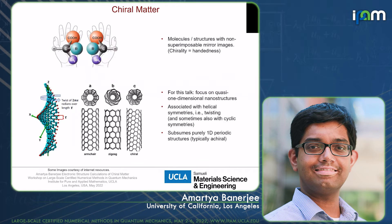Chirality in chemistry simply means handedness. A structure or molecule is chiral if you cannot superimpose it on its mirror image. For the purpose of this talk, I'm thinking of a more specific kind of chiral material — one-dimensional structures that have some sort of twist to become chiral. They could have an intrinsic twist, as in a chiral nanotube, or an extrinsic twist applied to a nanoribbon.